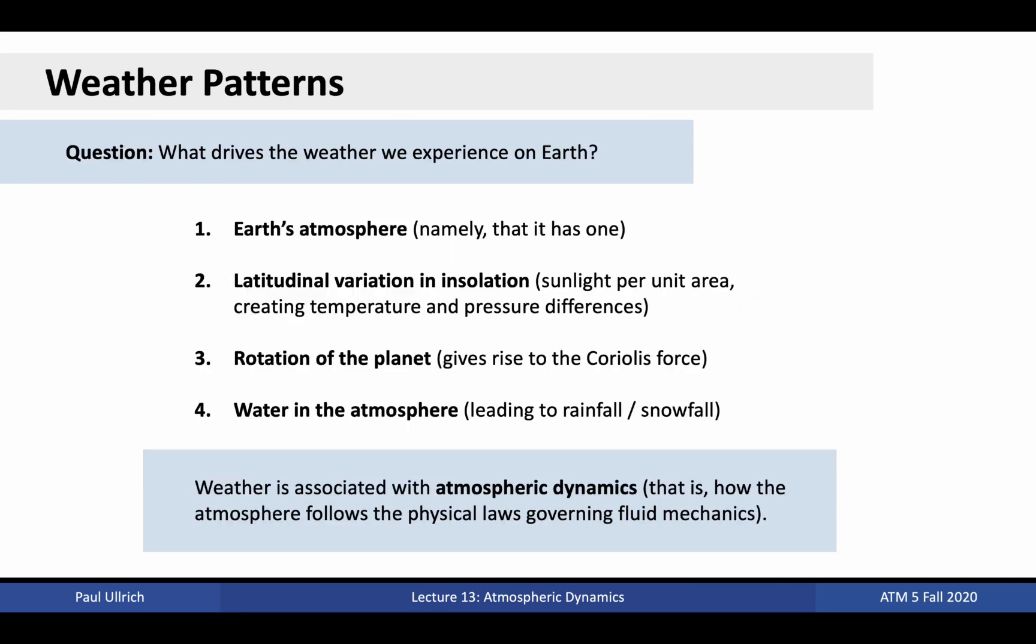So what are the drivers behind the weather we experience on Earth? There are four main factors that need to be considered when we talk about weather. First, weather exists because the Earth has an atmosphere. If there were no atmosphere, there would be no way that the atmosphere could work to counteract these temperature gradients. If you think about our solar system, Mercury is the closest planet to the Sun, but it is a planet without an atmosphere. With one side of the planet always facing the Sun, and no atmosphere to redistribute heat, the temperature differential ends up being enormous between the day side and the night side. If the Earth had no atmosphere or ocean, there would be no mechanism to carry heat from equator to pole, and so the temperature differential between these locations would be huge.